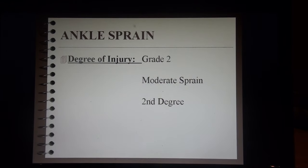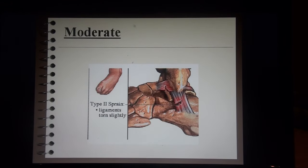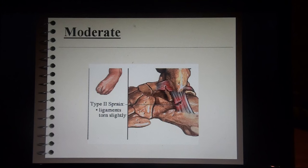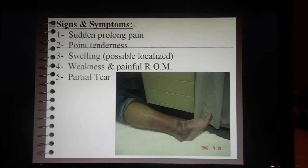In a grade two moderate sprain, more force goes through the lateral side and the ligaments are torn a little bit more — not just irritated or inflamed, but actually torn. Signs and symptoms include sudden prolonged pain, point tenderness, swelling, weakness, and painful range of motion.